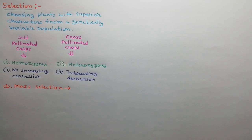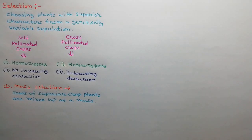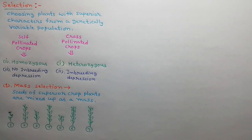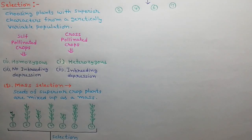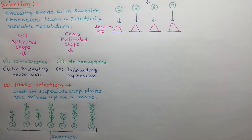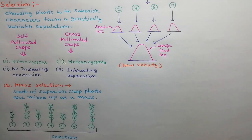The first method of crop improvement in self-pollinated crops is mass selection. In mass selection, plants with similar and superior phenotypes are selected and their seeds are mixed up as a mass to develop a new variety. For example, suppose there are 7 plants in a row. We observe the plants for superiority and similarity and find that plants number 2, 4, 6 and 7 are similar and superior. We select them, collect their seeds separately, then mix up their seeds as a mass. This mass of seeds represents a new variety.